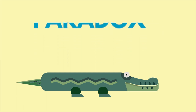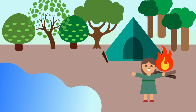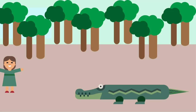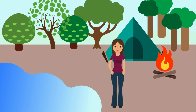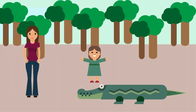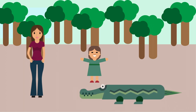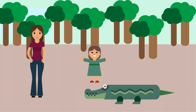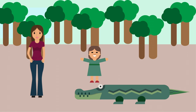This paradox consists of a crocodile with the ability to speak a human language. While a family is camping around a lake, their child wanders around and encounters a crocodile who later kidnaps her. When a mother gets to know about it, she immediately rushes to the crocodile and pleads him to return her child unharmed. The crocodile thinks for a while and agrees for some negotiations. He says he would return the child only if she correctly guesses whether or not he would return the child.